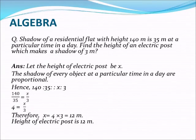Dear friends, today's question is: shadow of a residential flat with height 140 meters is 35 meters at a particular time in a day. Find the height of an electric post which makes a shadow of 3 meters.